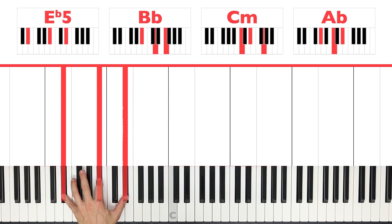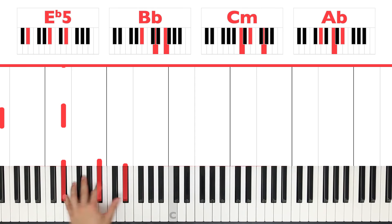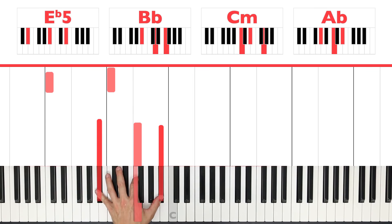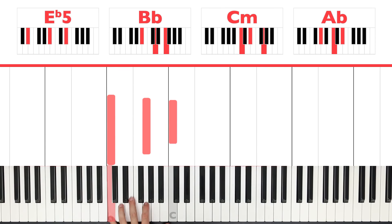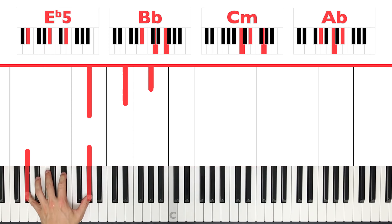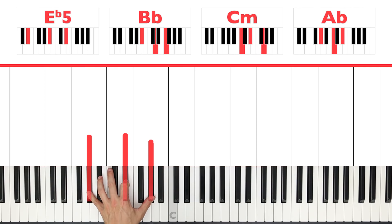But it's kind of cool if you jump these octaves and then you can also play that middle note here. So E flat, E flat, B flat, E flat. B flat, B flat, F, B flat. C, C, G, C and A flat, A flat, E flat, A flat. That's another option if you want to make it a bit more cool.